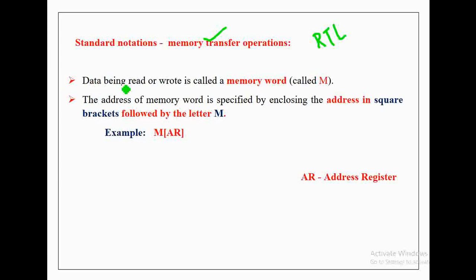Data being read or written is called the memory word, which is usually specified as capital M. The address of a memory word is specified by enclosing the address in square brackets following the letter M. For example, M[AR] is given, where M stands for memory and AR stands for address register. The address register specifies the address of the data to be transferred, and since it specifies the address, it is enclosed in square brackets.